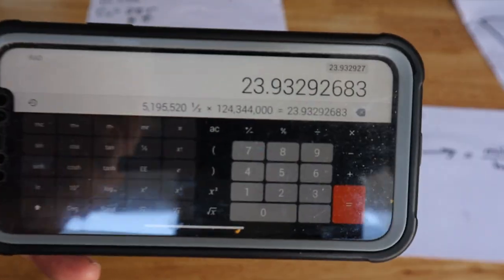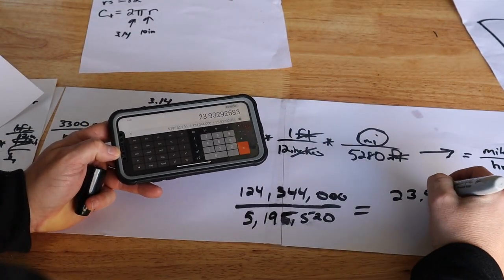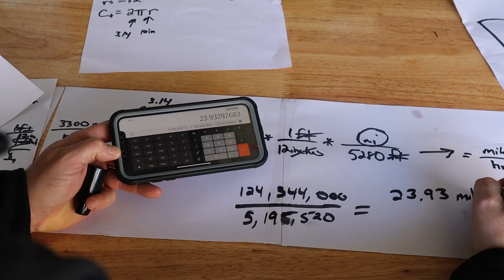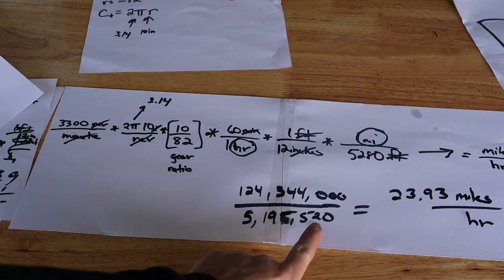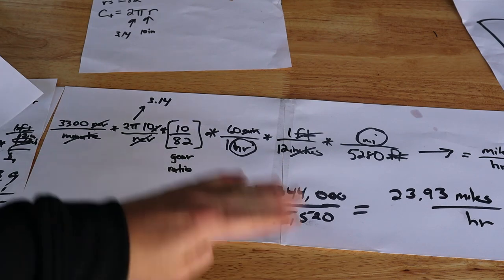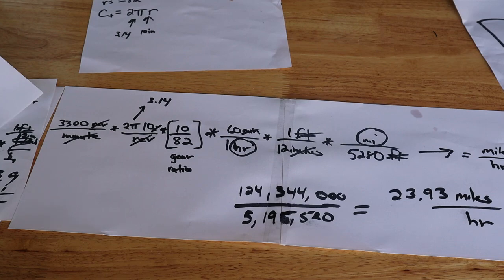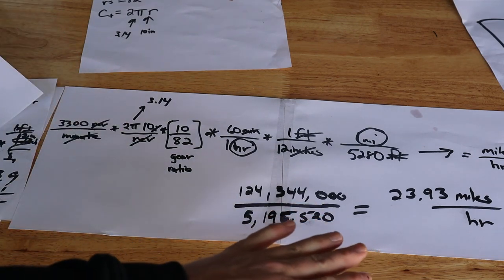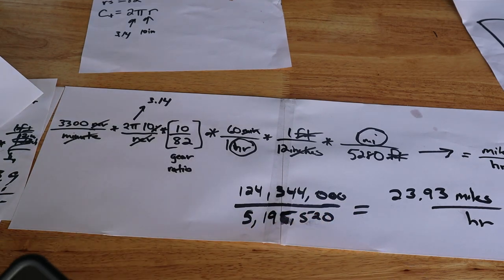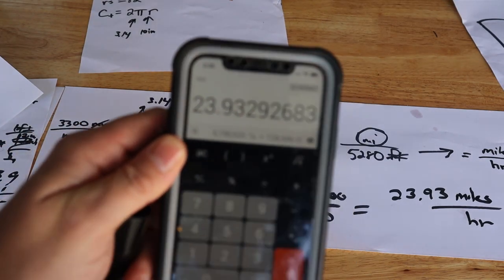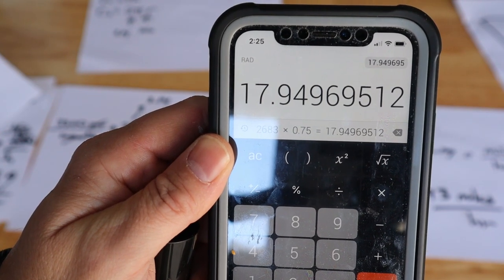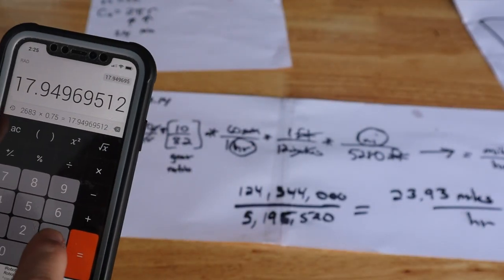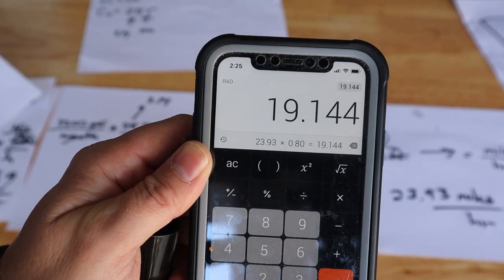So we come out with 23.93 miles per hour. That theoretically is the top speed of this motorcycle. Now this is for a completely efficient system - we know that is baloney in the real world, so we can throw that out the window. I'm going to be generous here and say 75%, maybe 80% efficiency. Let's go 75%. Multiply this number by 0.75 and we get 17.9 miles per hour. So 18 miles per hour. If we were 80% efficient we'd get a number of 19.14.